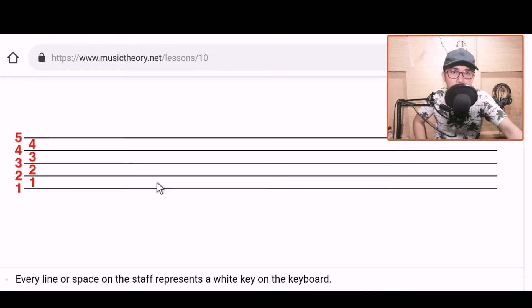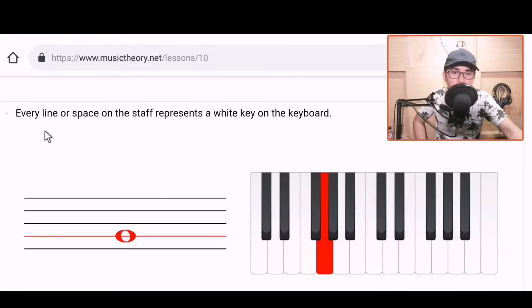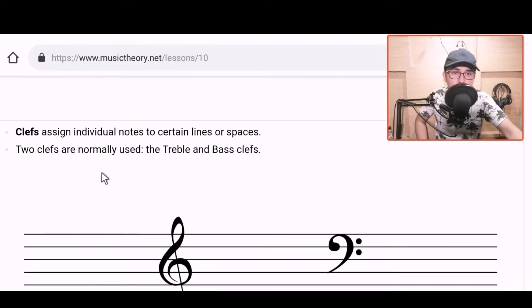Alright, so let's proceed to the next part. Every line or space on the staff represents a white key on the keyboard. So this is our basic. Every line or space on the staff, wherever you place a note there, all of them will land on any of these white keys on the keyboard. Let's set aside this part for now. Move to this: clefs.